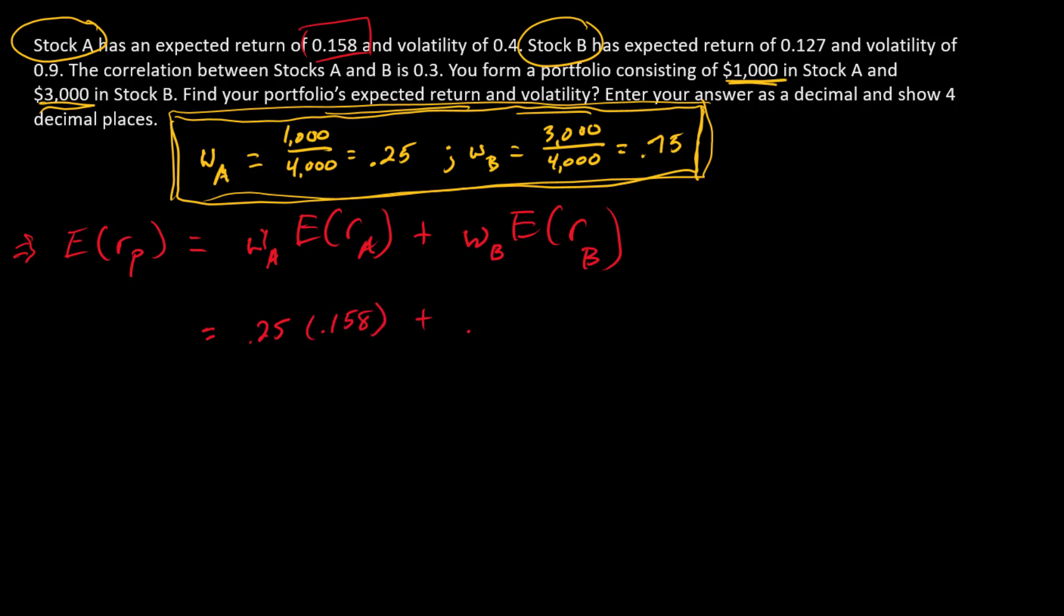Now let's go to B, so the weight in B is 0.75. What's the expected return of B? That's given here, 0.127. So the expected return for the portfolio is 0.1348, or 13.48%. So there's the answer for the expected return.